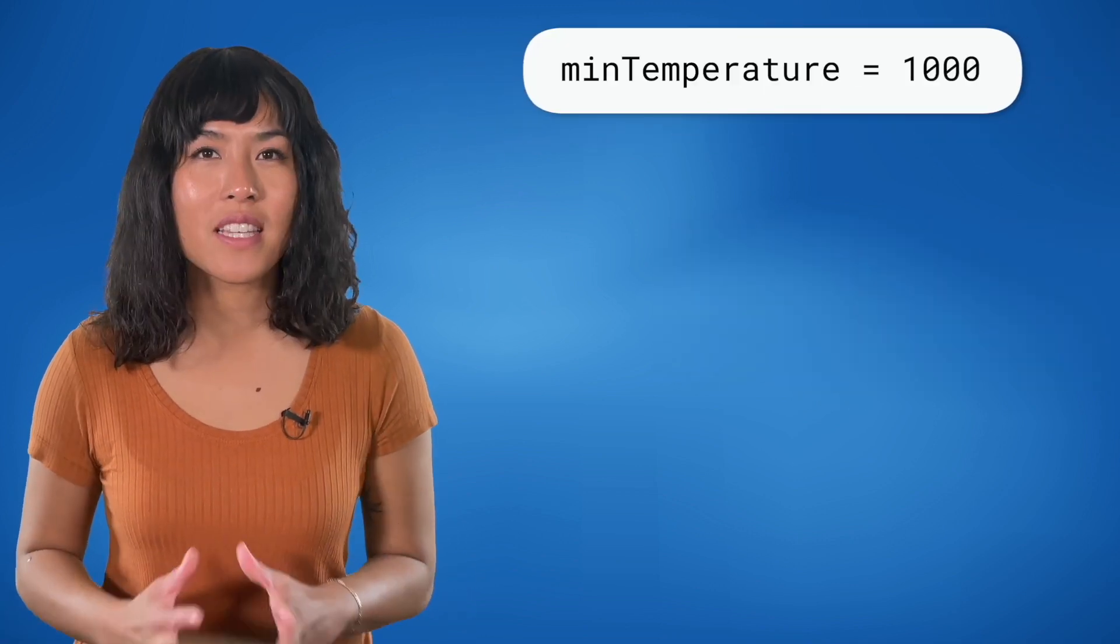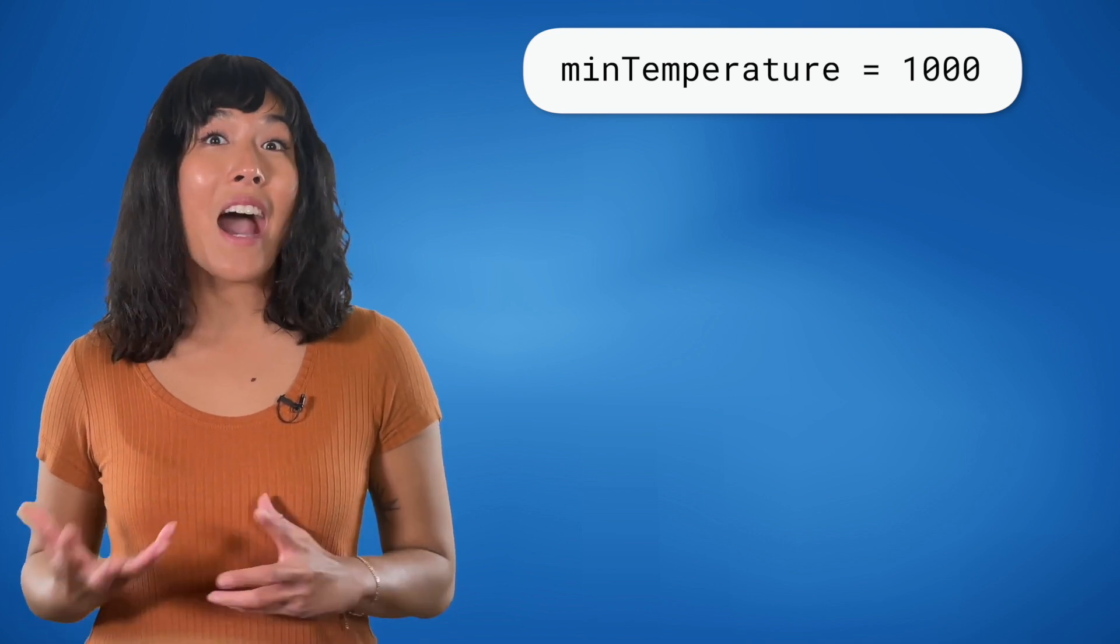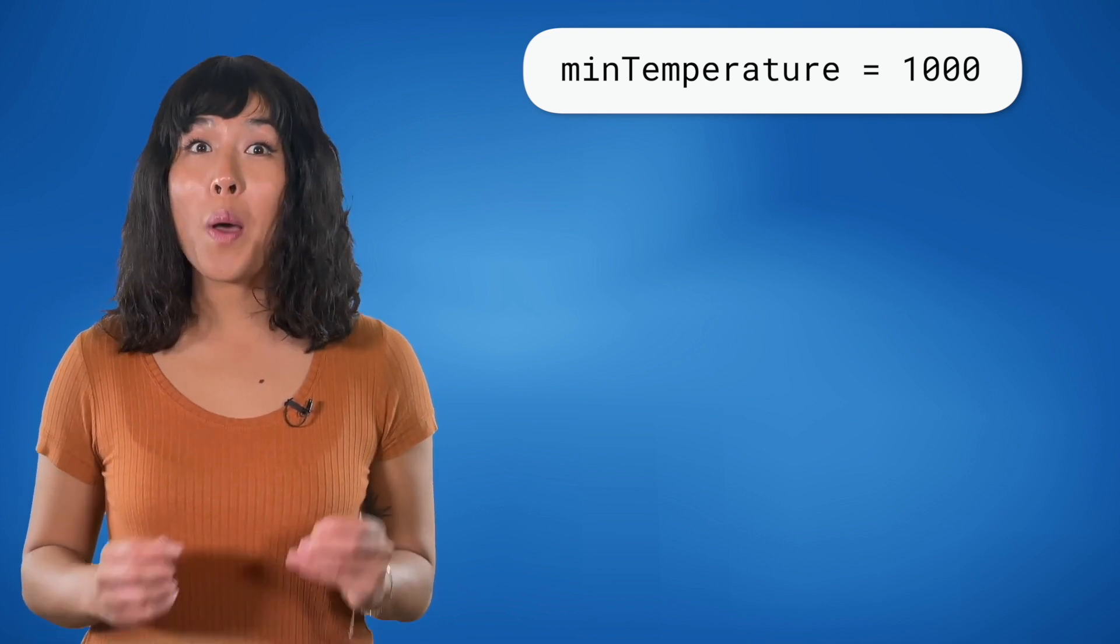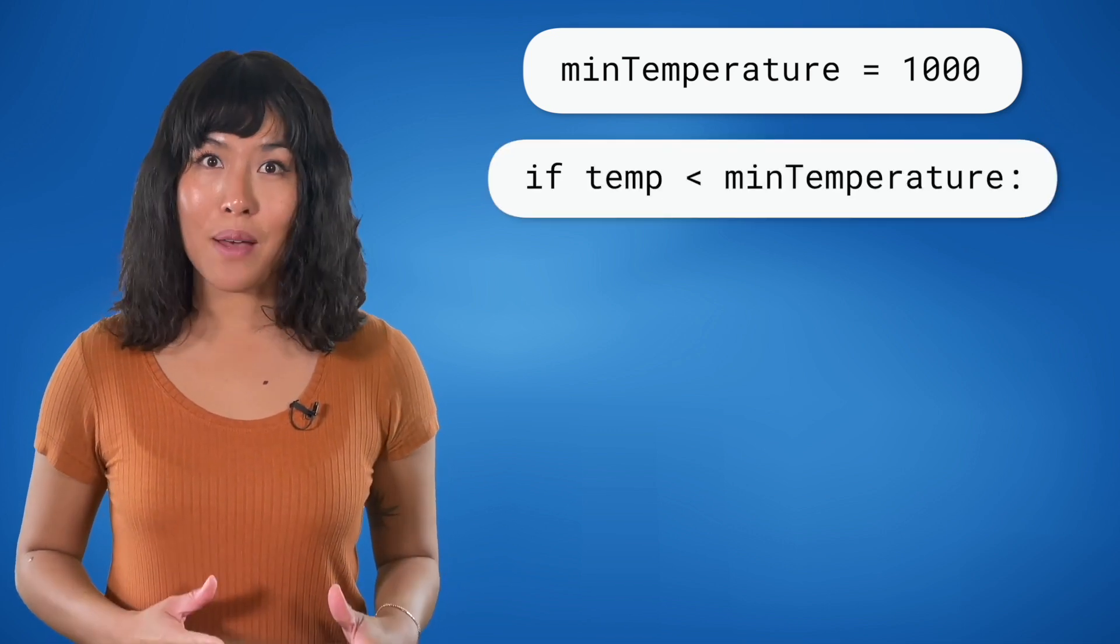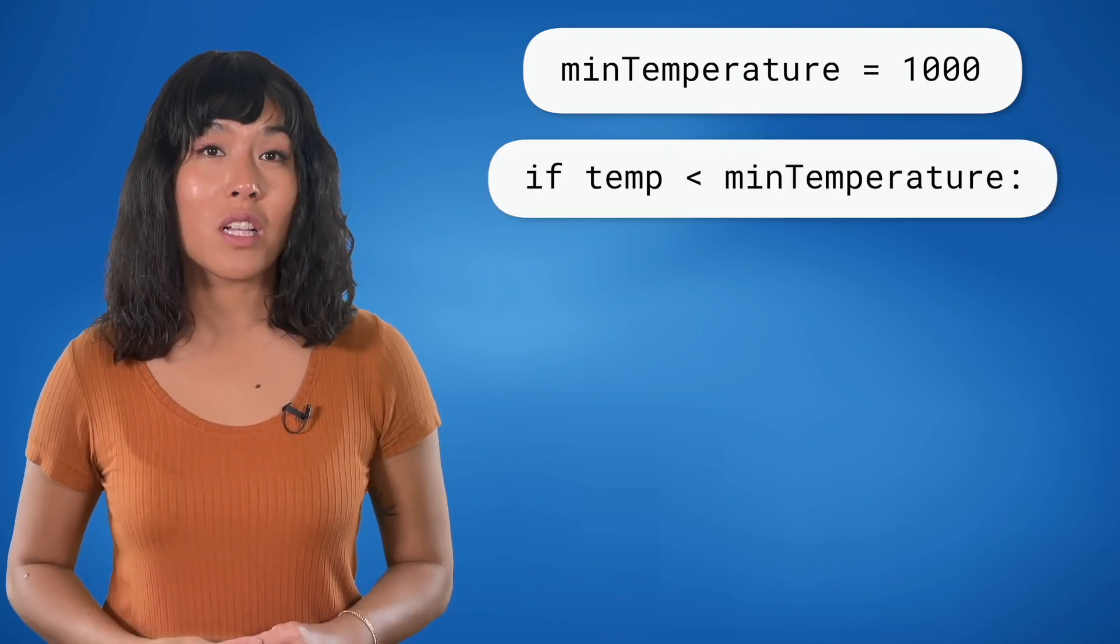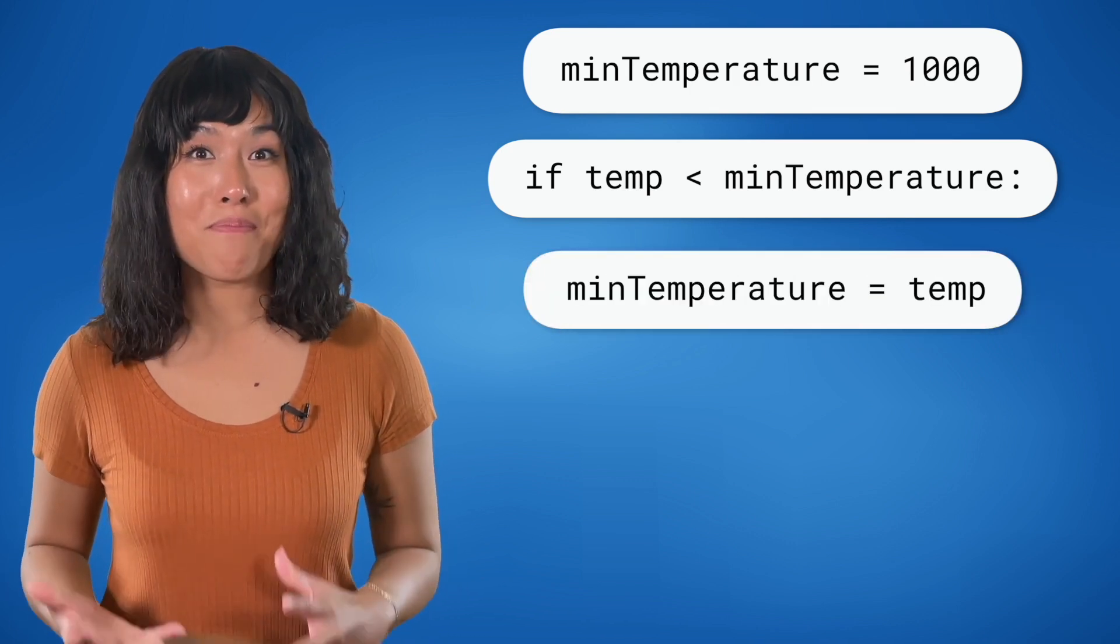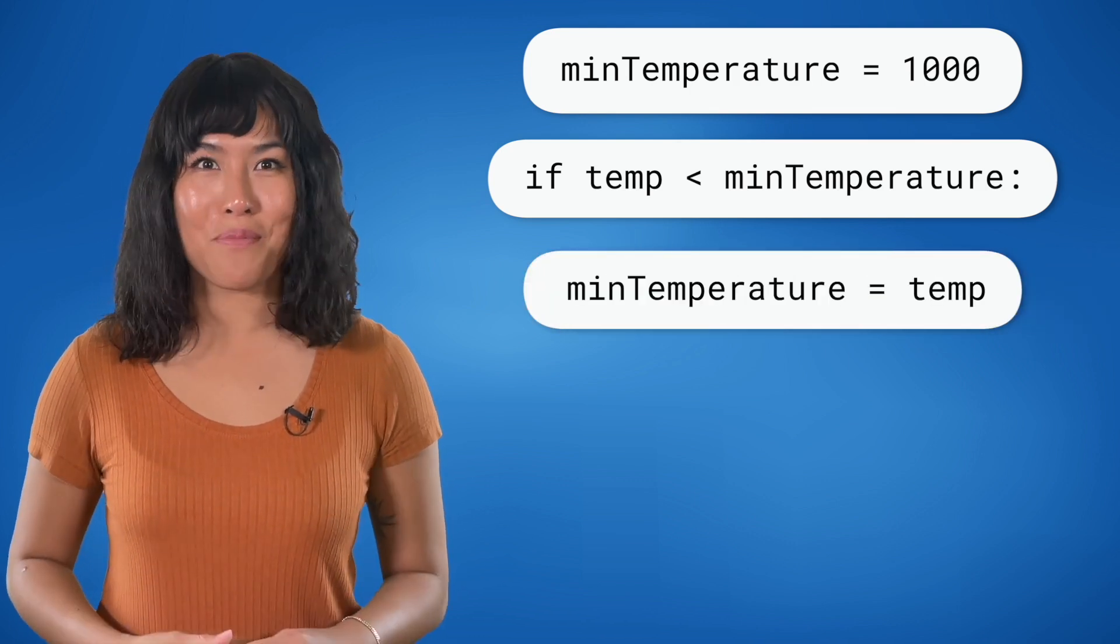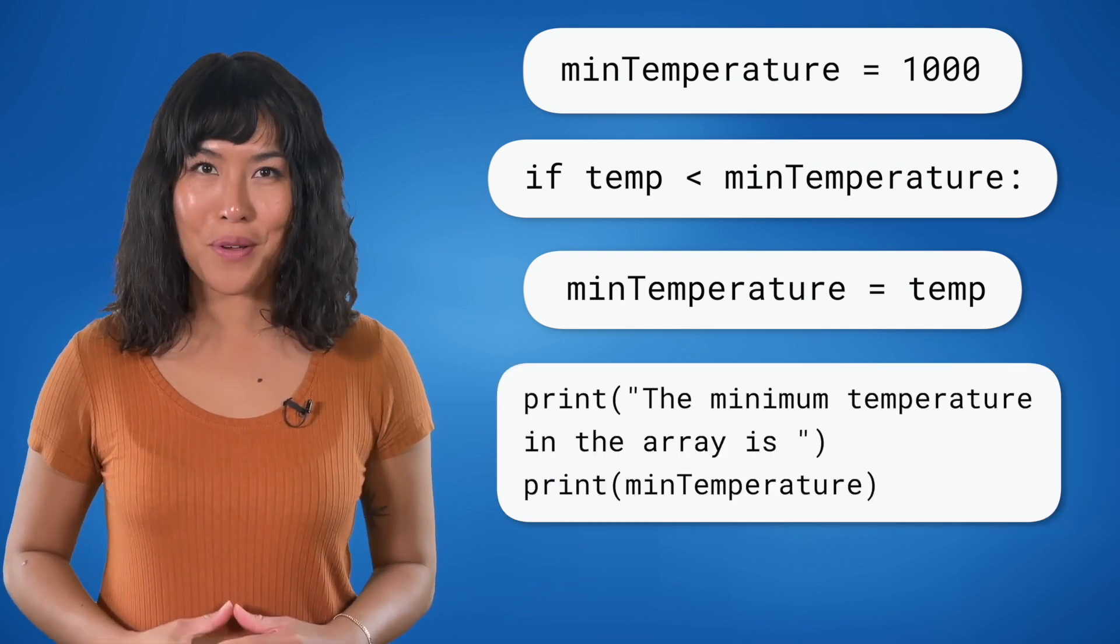Instead of initializing max temperature to a very low value, we now use a very high value and assign it to min temperature. We now check if the current temperature, temp, is lower than our assumed lowest temperature, min temperature. We now update min temperature instead of max temperature. Finally, when printing, we should print the min temperature variable.